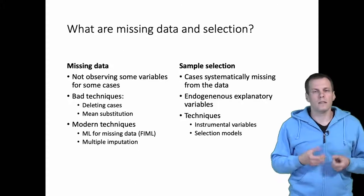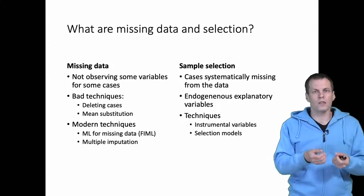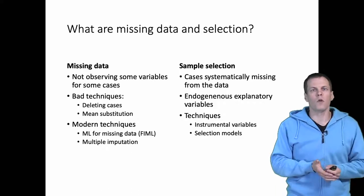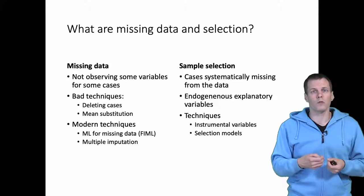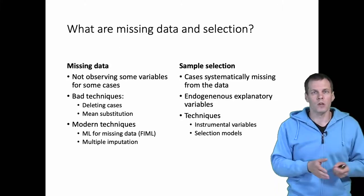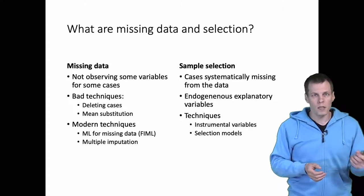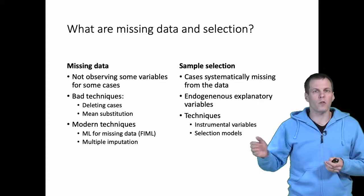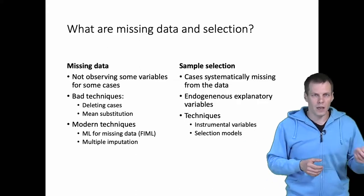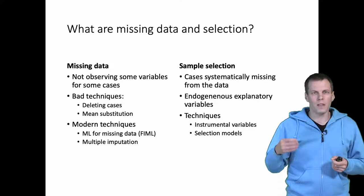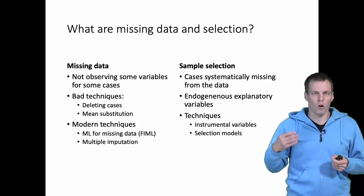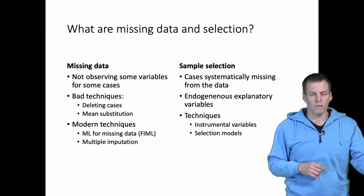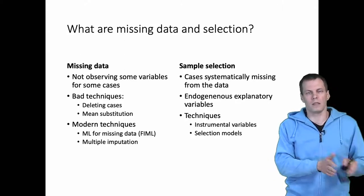Another problem is sample selection or selection on the dependent variable. A classic example is a medical trial. If you allow people to select themselves into the treatment or control, only those people who are sick go to the treatment and those people who are not as sick go to the control group. Then if you compare the treatment and control after they receive the medication, the difference is not only because of the medication's effects, but because the sick people decided to go to the treatment and the people who are not as sick decided to go to the control.